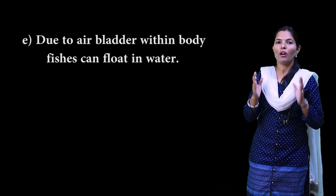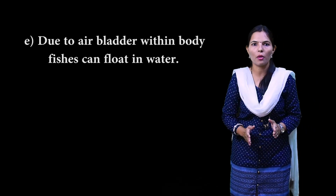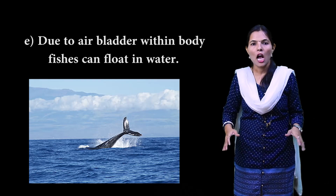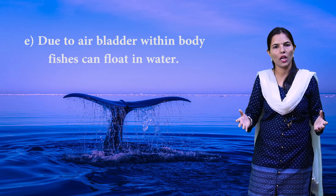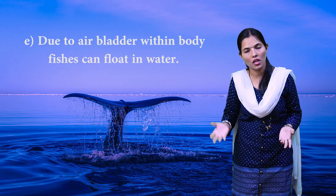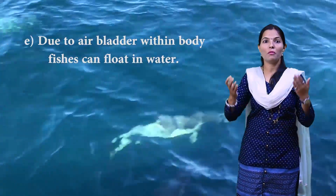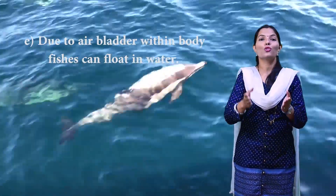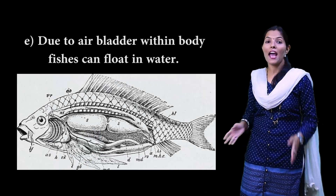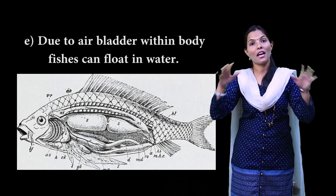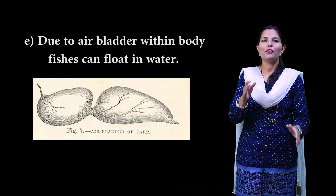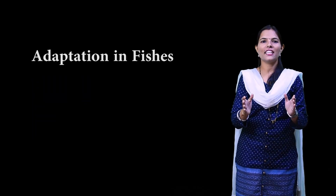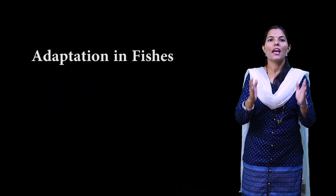The next and last adaptation of fishes is that they have an air bladder. The air bladder helps the fish to float or move up and down in the water. It is because of the air bladder that fishes can maintain their position in the water. I think what adaptation the fishes have should now be clear.